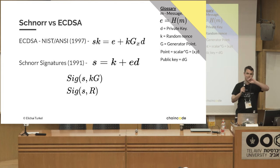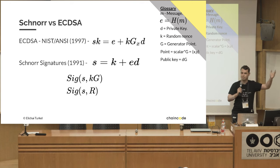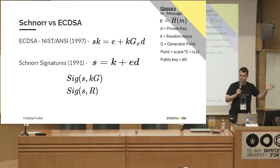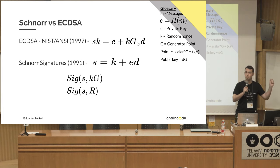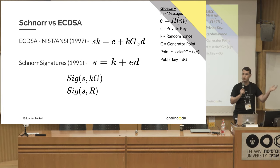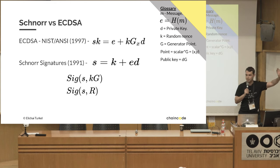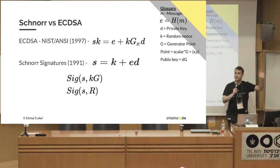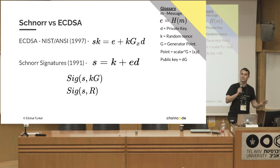Elliptic curves: you have a point on a graph, and a scalar is just a fancy math name for a number. To convert a number to a point, you need to multiply it by some generator point. By multiplying a scalar by a generator point, you get a point on the graph, which is just a basic x and y coordinate.